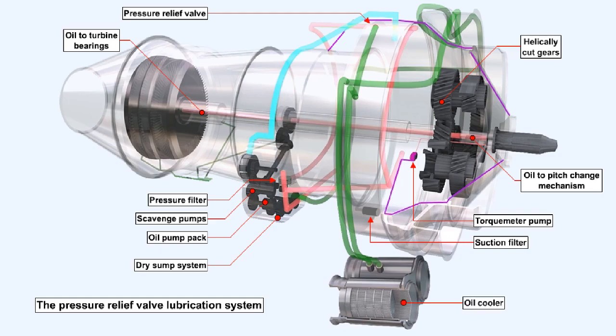The scavenge pumps push the oil through an air cooled oil cooler where the heat is dissipated into the atmosphere. From the oil cooler the oil travels to the deaerator tray where any air bubbles which will have been formed in the oil escape and the oil falls to the oil tank which in this case is contained around the engine intake.